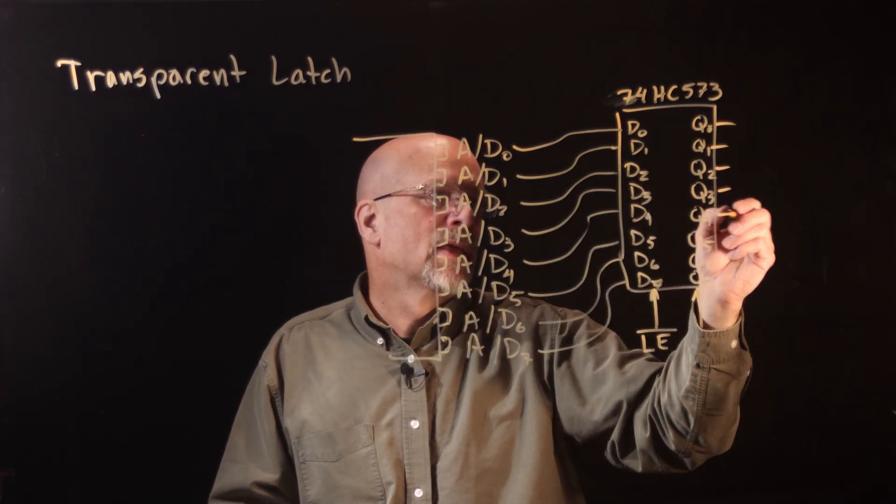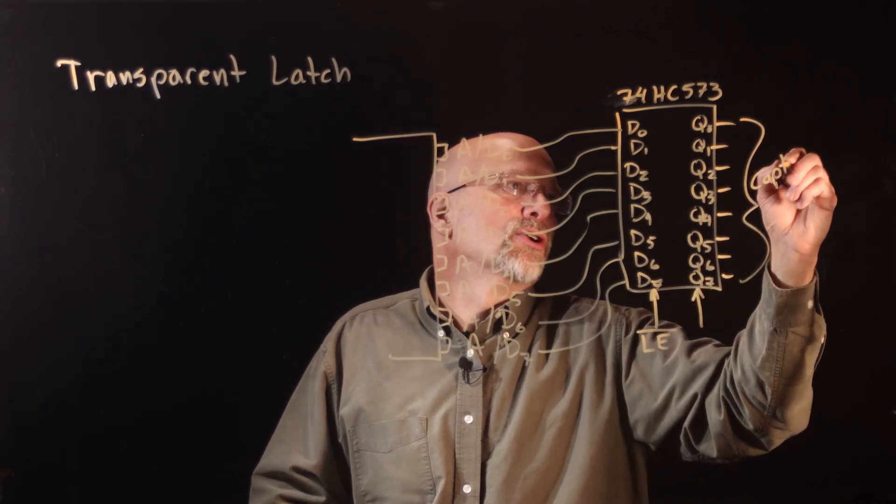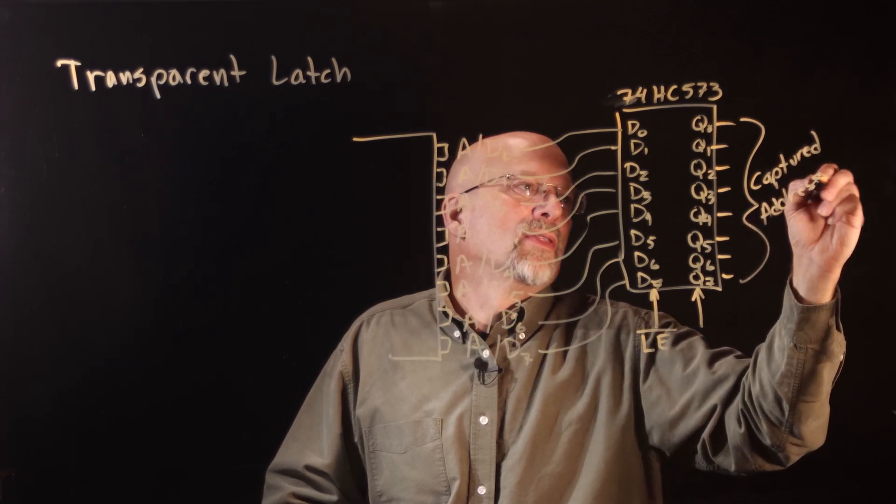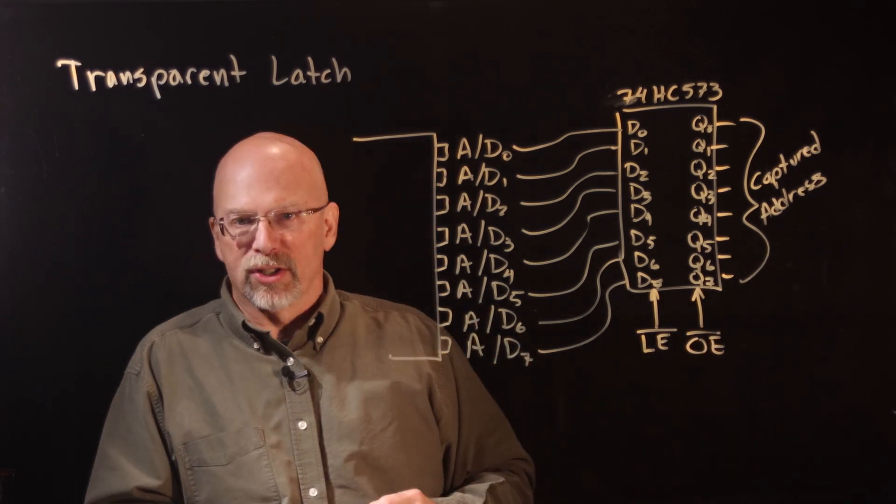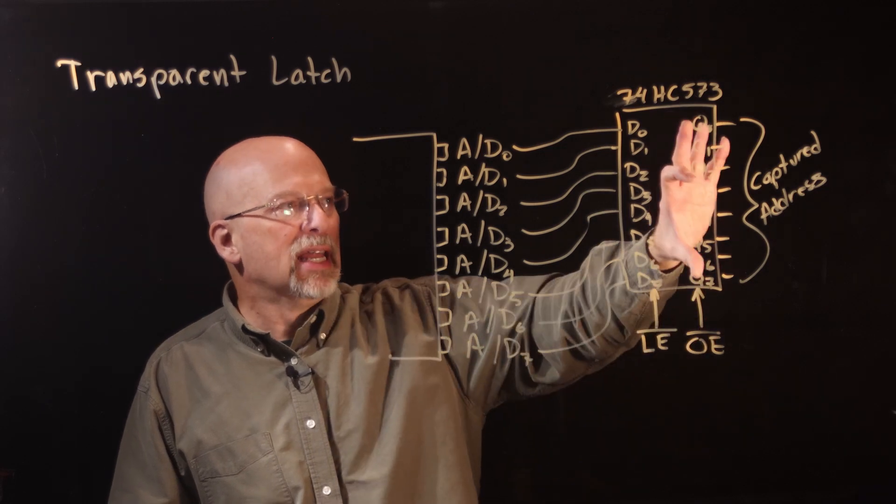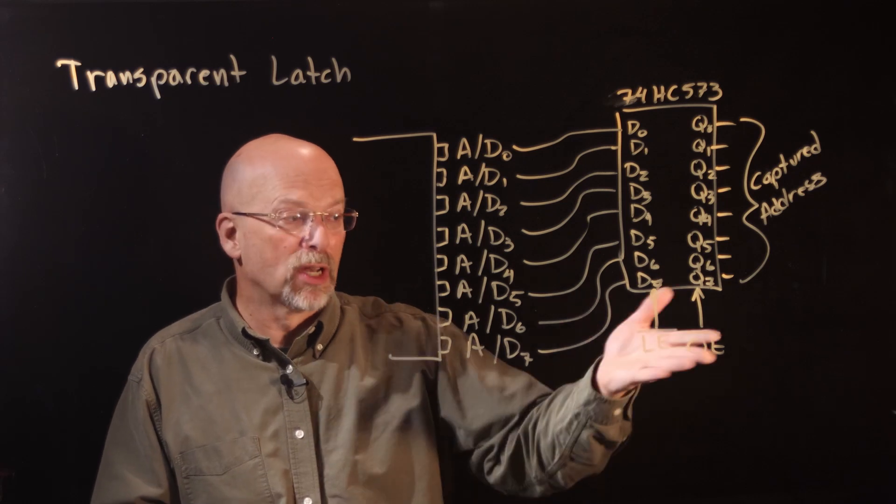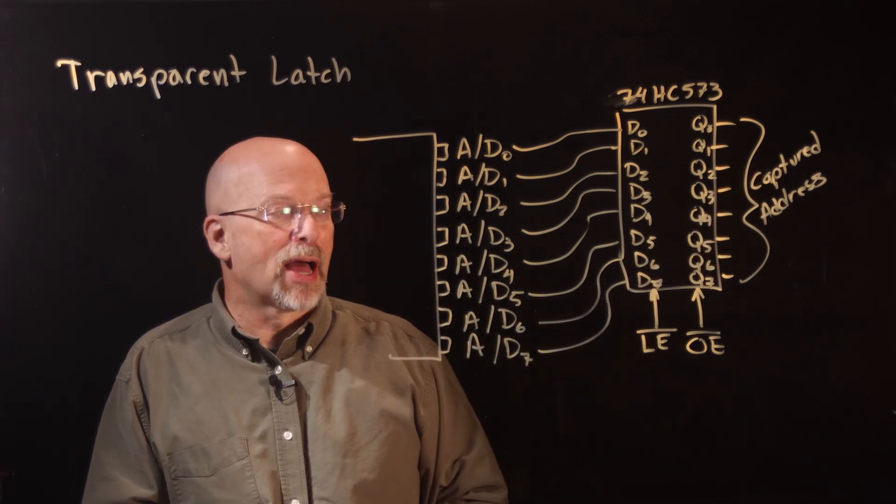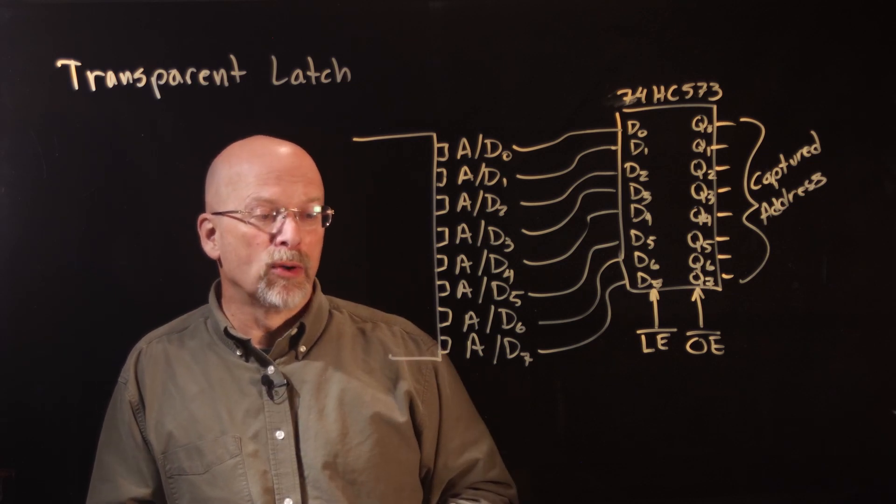And so what you had was the captured address on the outputs. The other input, which is not really important to what our discussion is right now, was output enable, and you could actually enable or disable the outputs. A lot of the time we would just simply tie that to a logic zero—tie it to ground—so that it was always outputting the valid value.